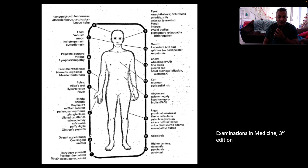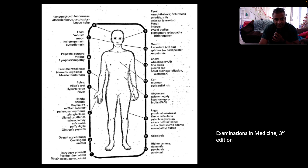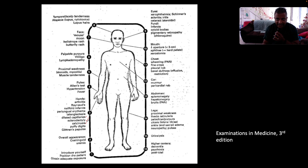Pick up the hands and look for any typical deformities — something called Jaccoud's arthropathy, which looks like rheumatoid arthritis but is non-deformative by definition. Look for Raynaud's phenomenon, the triphasic color change in the hands. Look for nail fold vasculitic infarcts at the base of the nails, periungual erythema, telangiectasias, dilated capillaries, sclerodactyly — which speaks to tapering of the fingers — calcinosis, which may manifest as nodules at the joints, the interphalangeal joints, puffy digits, and Gottron's papules.